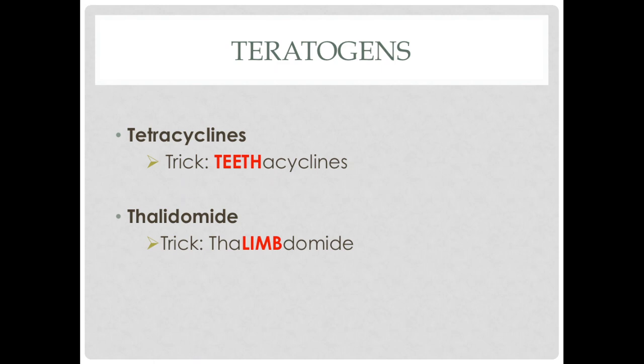Some teratogens to know include tetracyclines, which cause discoloration of the teeth — think of 'teeth-cyclines' for tetracyclines. Another one is thalidomide — think of 'thalimb-omide' because it causes deformities of the limbs.